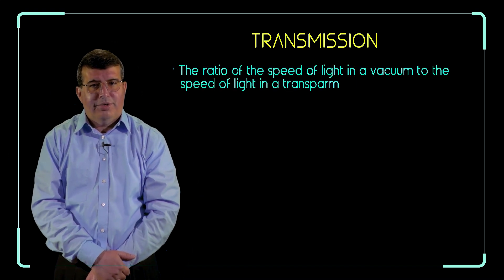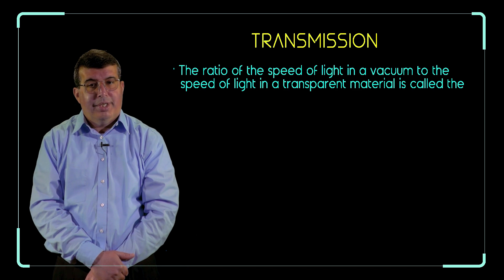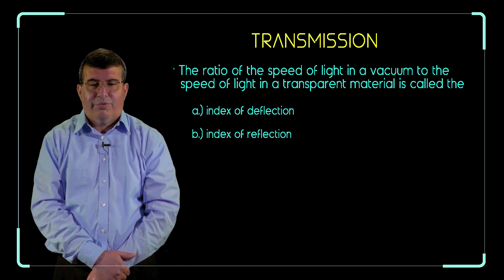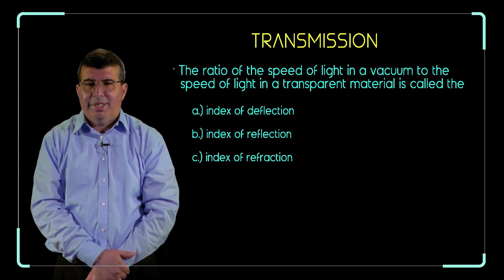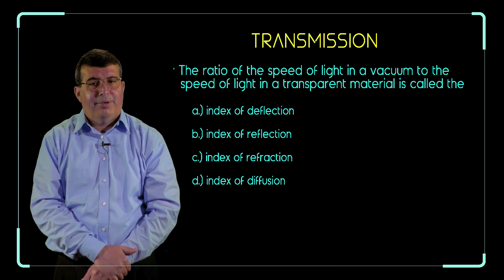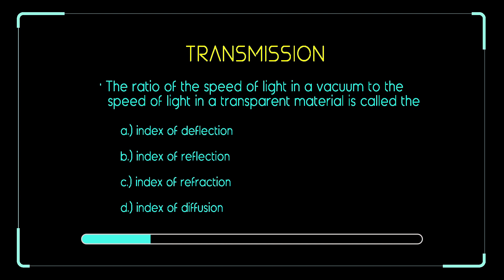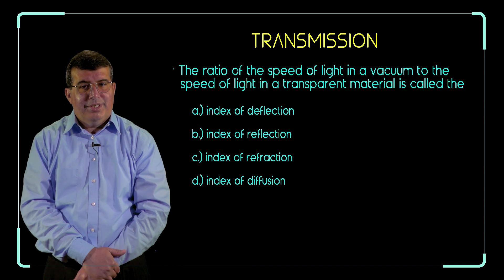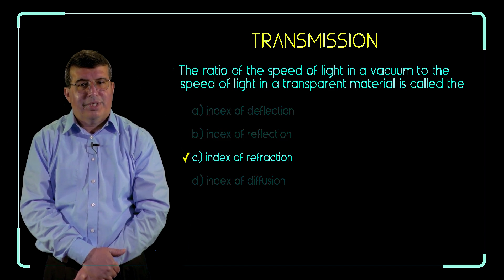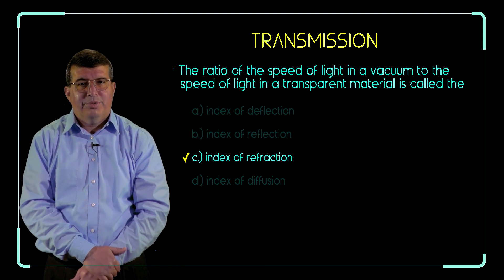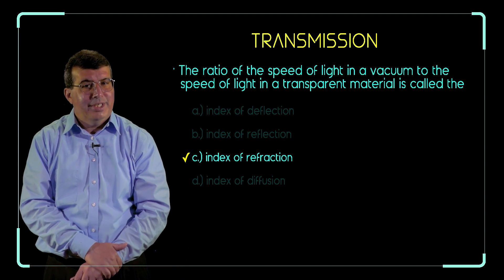Multiple choice: the ratio of the speed of light in vacuum to the speed of light in a transparent material is called (A) index of deflection, (B) index of reflection, (C) index of refraction, or (D) index of diffusion. The correct answer is C, index of refraction — that is our definition: the ratio of the speed of light in vacuum to the speed of light in a transparent material.